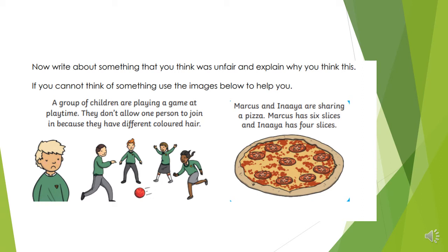Do you think these are fair or unfair and explain why you think that. A group of children are playing a game at playtime. They don't allow one person to join in because they have got different coloured hair. Is that fair or unfair? Marcus and Anaya are sharing a pizza. Marcus has six slices and Anaya has four slices. Is that fair or unfair?